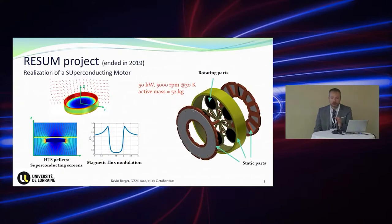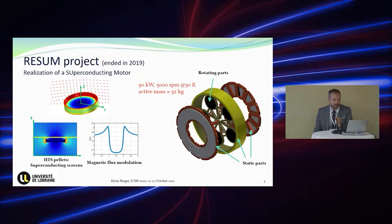In our lab, we developed some flux modulation machines — you saw one of them yesterday. I will go into more detail in this presentation. We were looking at bulk superconductors in a project called RESUME, which ended in 2019. We developed a 50 kW, 5000 RPM machine operating at 30 K, with an active mass of about 50 kilograms — so 10 kW per kilogram.